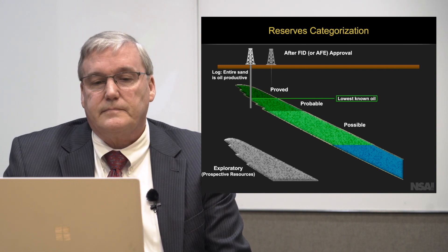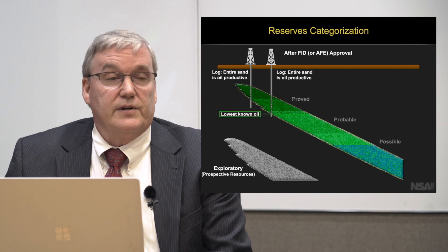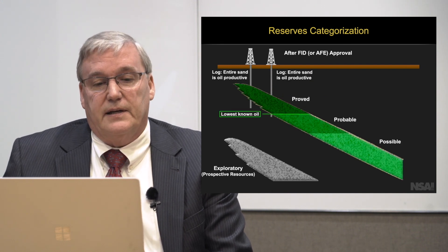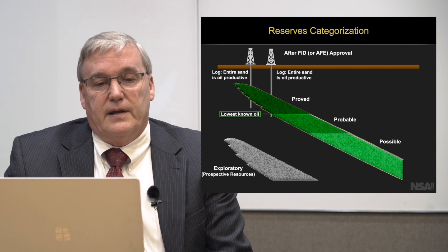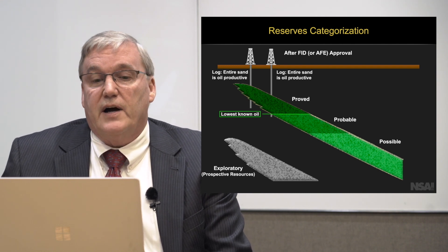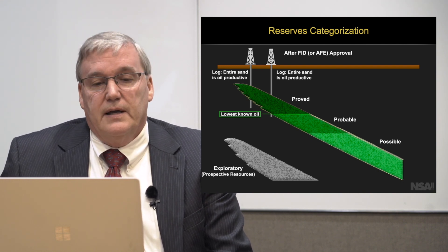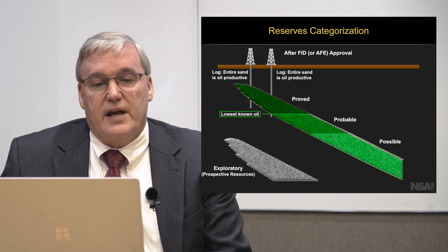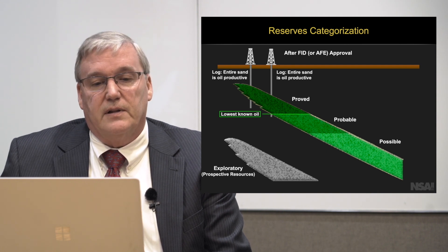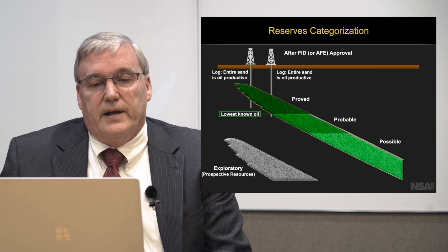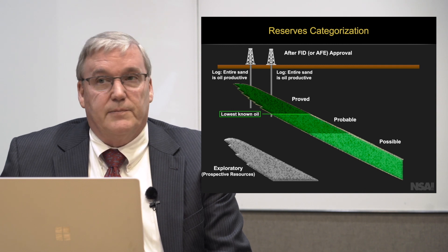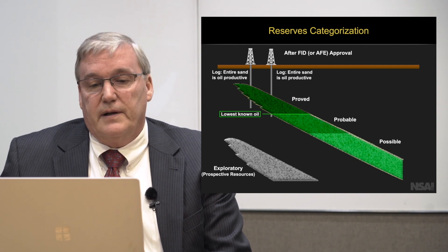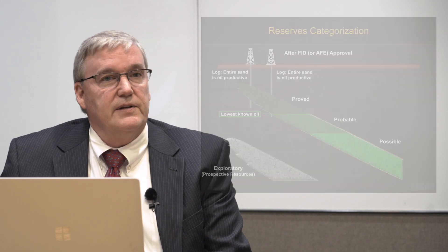Now we come in and drill a second well after the FID and we end up with a full well full of hydrocarbon all the way to the bottom. That pushes our proved reserves down farther to a deeper level. We estimate the probable reserves a little bit deeper than before, and now we're saying we may be able to find something even deeper than the high-side case with our possible reserves. We still have no new data in the exploration on the second sand, so that's still prospective resources.